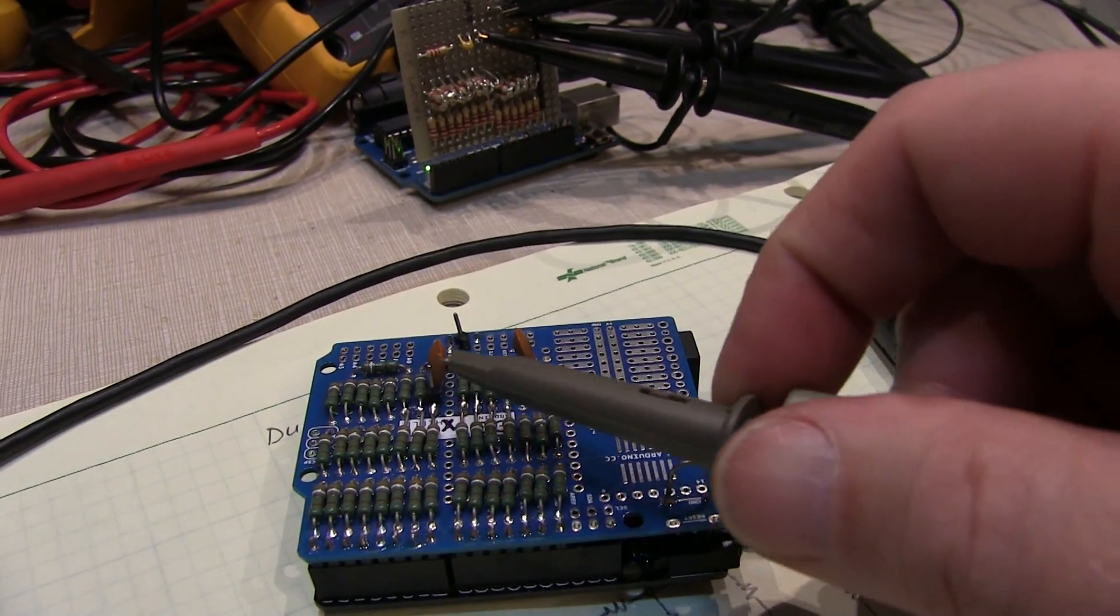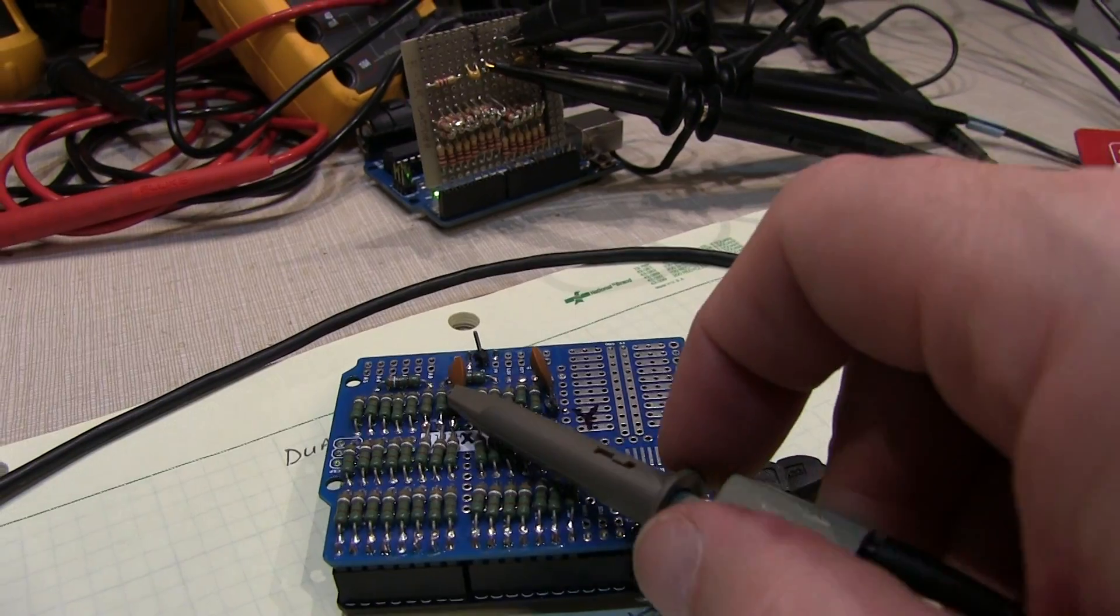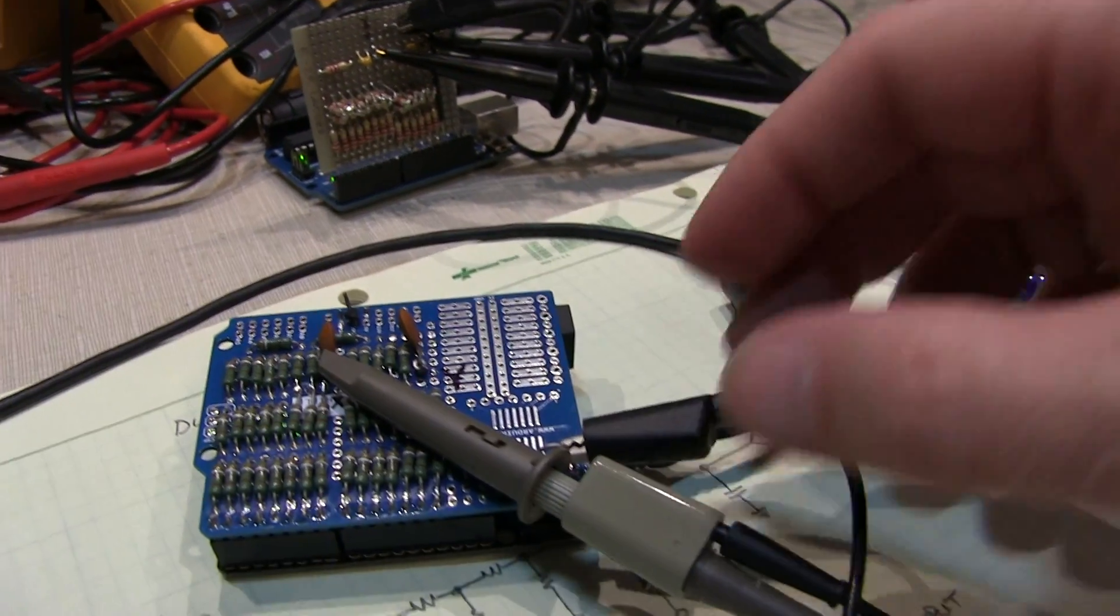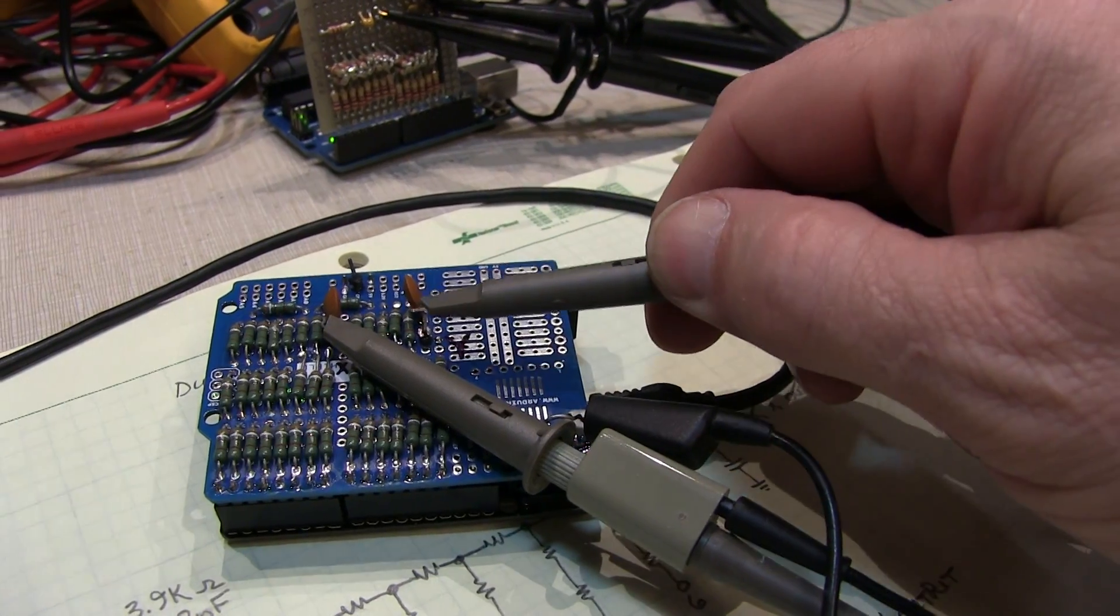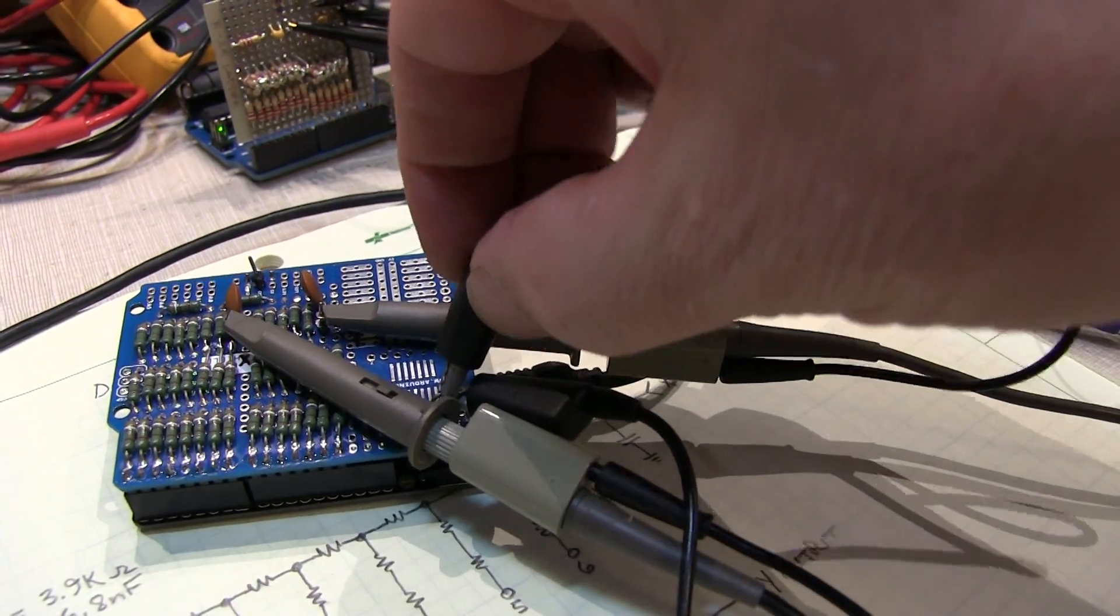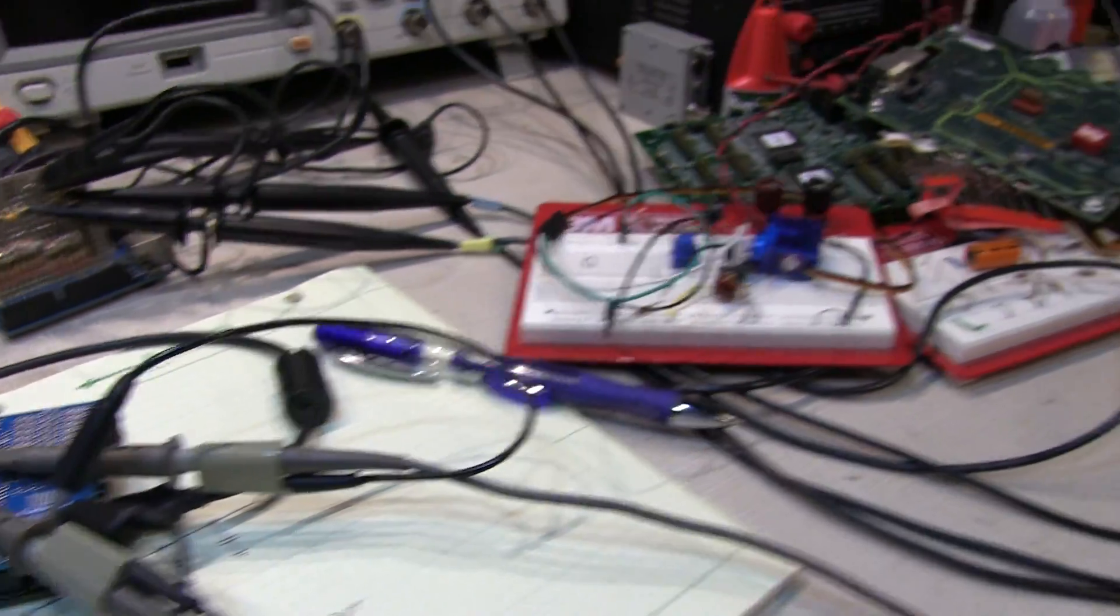So if we hook up our X and Y scope probes to channel 1 and channel 2 of the scope we're using, and let's get the ground hooked up there. When we look over at the scope, we can see the digital waveforms.